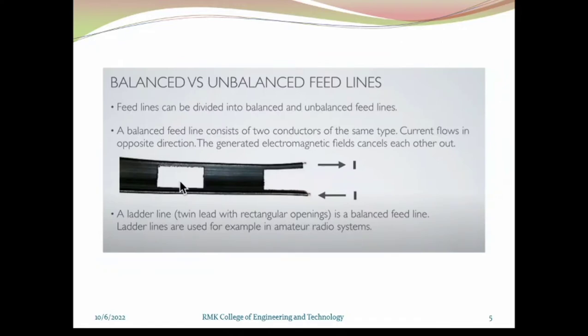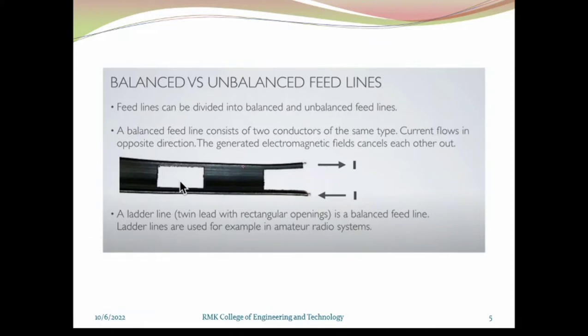Before proceeding, what do you mean by balanced and what do you mean by unbalanced feed lines? Take for example, here we have twin lead wires — we have two conductors. One is at the top, another one is at the bottom. The current direction will be opposite to each other, so the generated electromagnetic fields cancel each other. This is called a balanced feed line, and it is used in amateur radio systems.